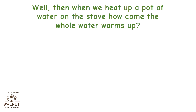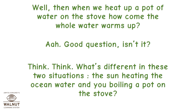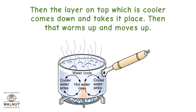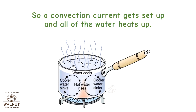When we heat up a pot of water on the stove, how does the whole water warm up? In a pot, we are heating water from the bottom. So the bottom layer of water becomes warm, expands, and rises. Then the layer on top, which is cooler, comes down and takes its place, then warms up and moves up. So a convection current gets set up and all of the water heats up.